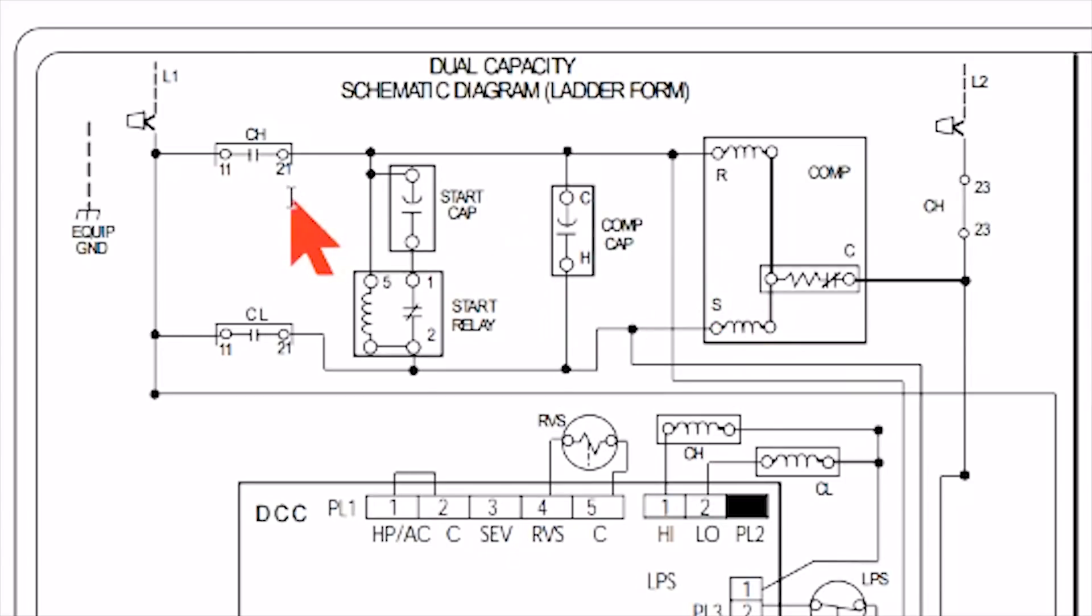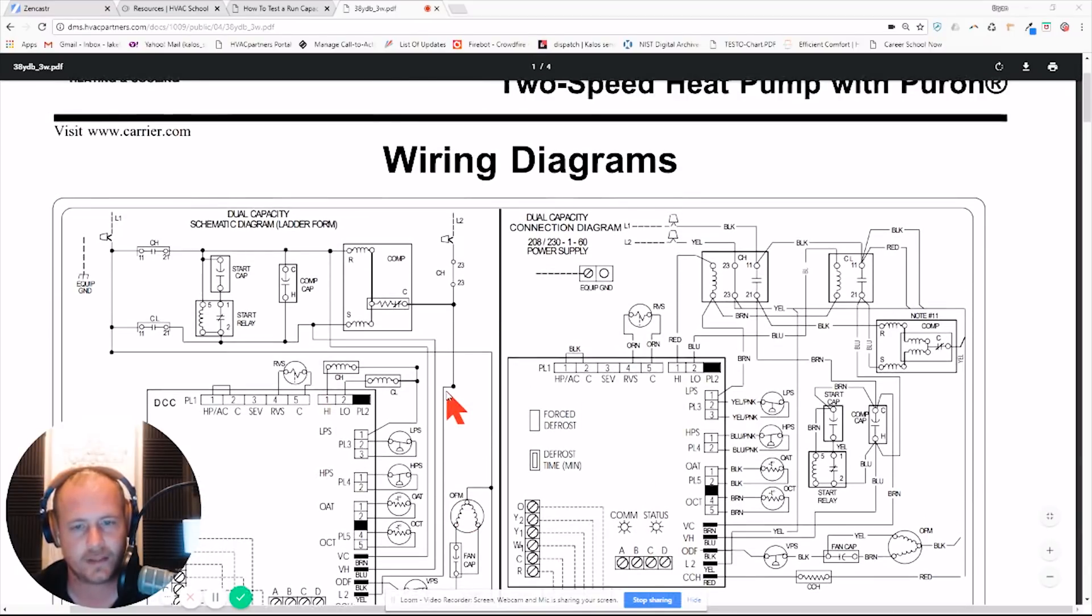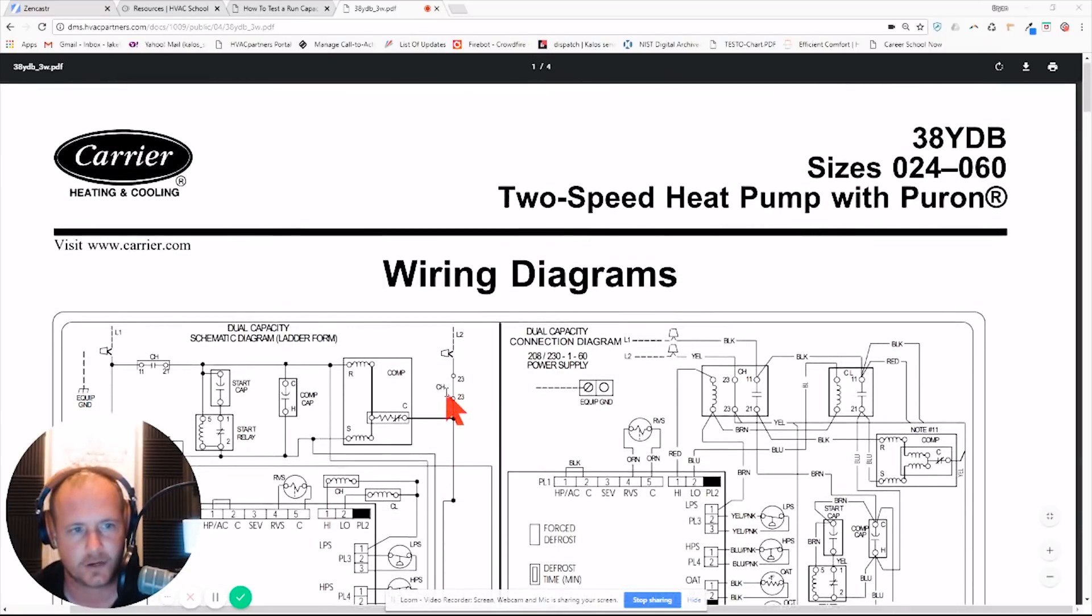But that is how it works, and that is why it runs in one direction in high speed where it engages both of the cylinders, and then another direction at low speed when it only engages one. Hopefully you found that to be interesting. That is the Bristol T8 series of compressors. This specifically is a wiring diagram for a 38 YDB, an older Carrier two-stage heat pump. All right, thanks for watching and we'll see you next time.